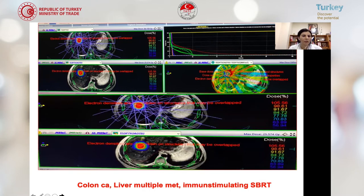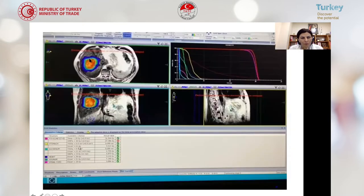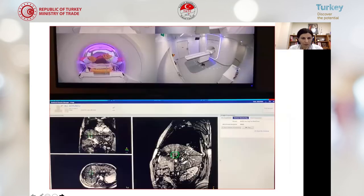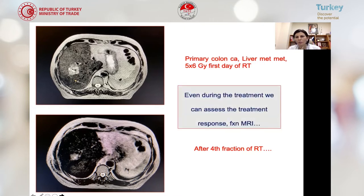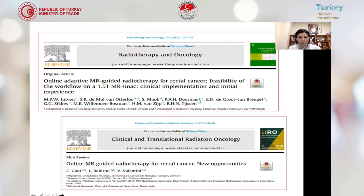Here you see the tumor volume and the treatment images from three different planes. Here is also a patient with liver metastasis from colorectal cancer. We planned five fractions of 6 Gy radiotherapy. After the first fraction you can see how the tumor slowly shrinks. Our device also has a tumor assessment opportunity between fractions — even during treatment we can assess the treatment response using functional MRI.